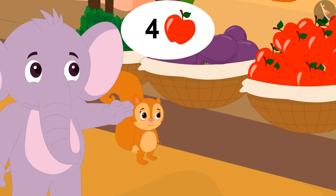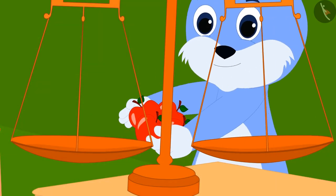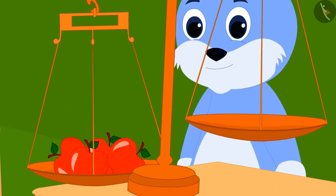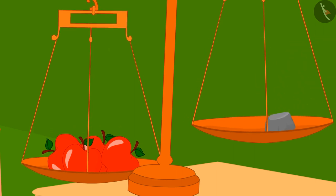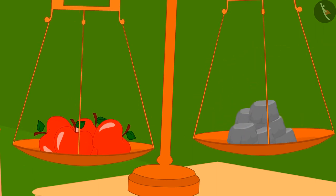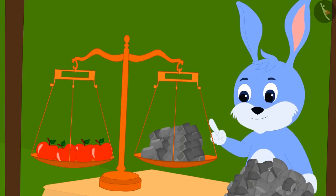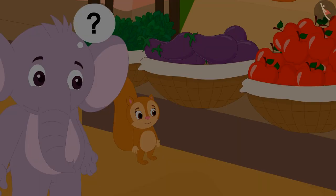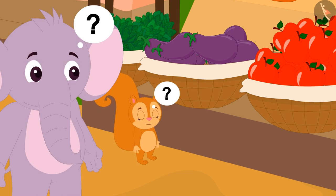Now Appu also took four apples. Bunny once again placed four apples of Appu on one side of the scale and started placing stones on the other side. This time, when both the scales came to the same level, there were 35 stones on the scale. Appu and Chanda were both shocked as to how this could happen.